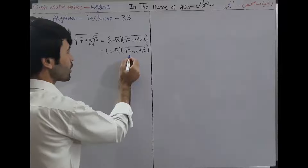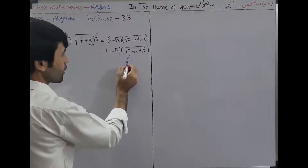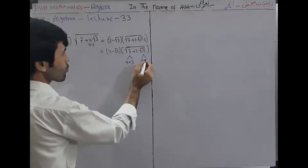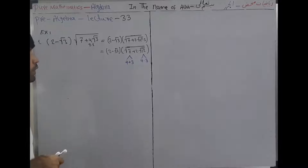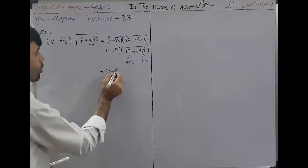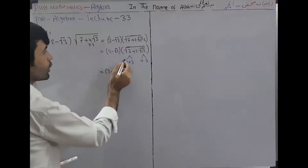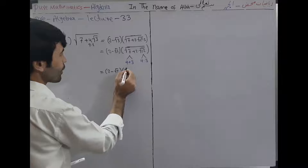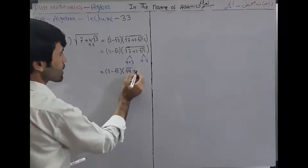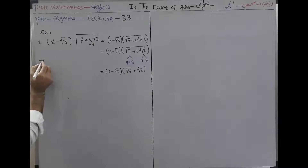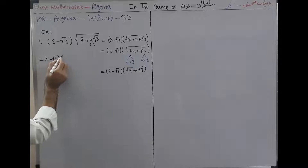Now we need to find two numbers which, when added, give 7, and when multiplied, give 12. Those numbers are 3 and 4. So we rewrite: it is equal to (2 - √3) into (√4 + √3), which is (2 - √3) into (2 + √3).